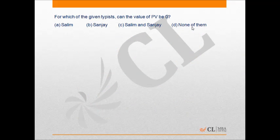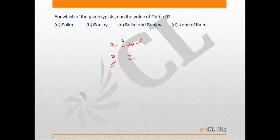For Question 2: for which of the given typists can the value of PV be zero? This is a tricky question. We need to check whether it is possible that (X + W) − (Y + Z) = 0, i.e., X + W = Y + Z, for any of the persons.